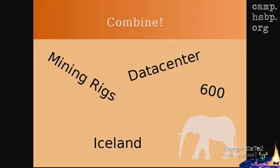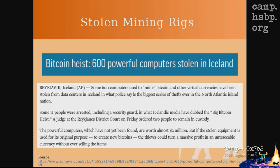Here's a more obscure story. Let's combine the words: mining rigs, data center, 600, and Iceland. Someone stole 600 mining rigs out of a data center in Iceland — an island surrounded by water. And no one knows where those mining rigs are. They just disappeared.